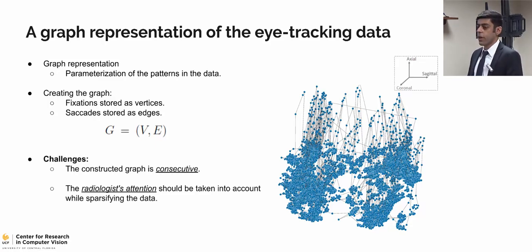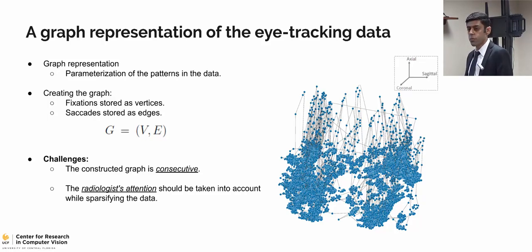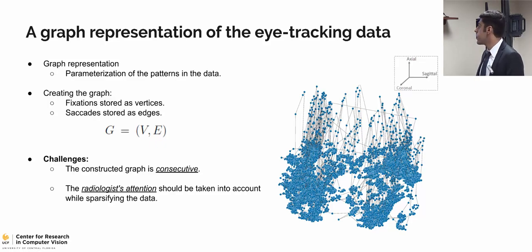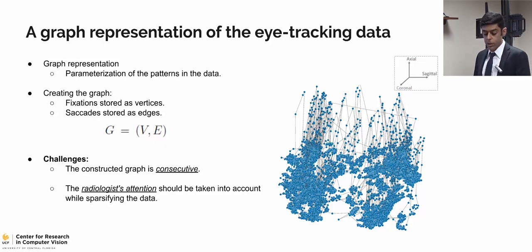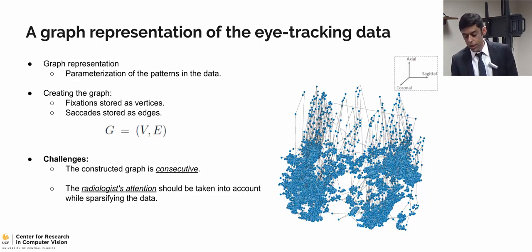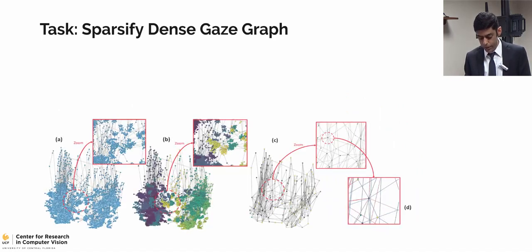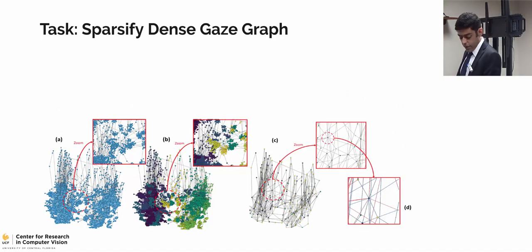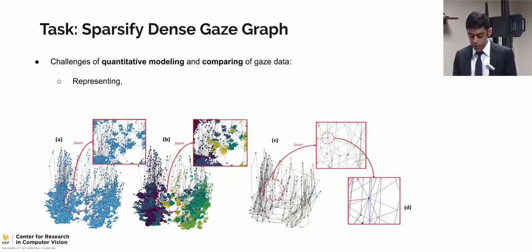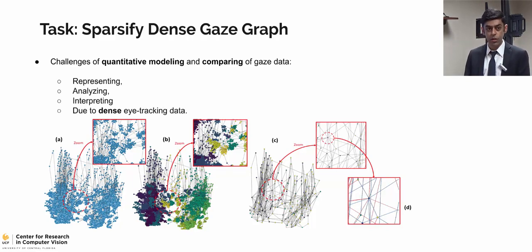There are challenges if we define the graph this way. This graph would have a consecutive nature, meaning the degree of each node would be maximum 2, which makes any kind of graph analysis or sparsification nearly impossible. Also, we didn't account for radiologists' attention in this formulation, which is important given the high-risk healthcare application. So in this chapter, we target these two challenges: given a very dense graph, how can we sparsify that data for a better representation, analysis, and interpretation?